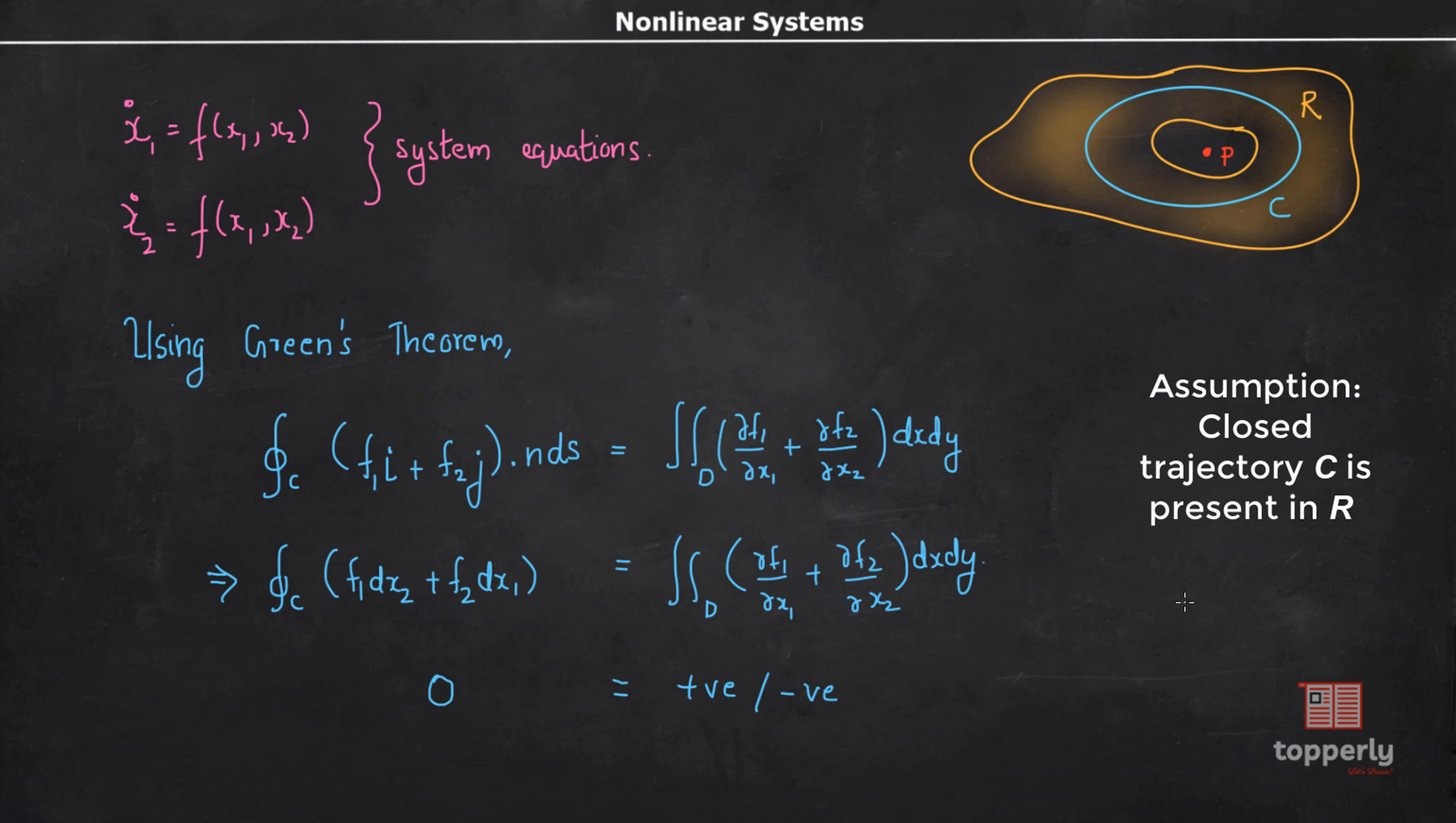This contradiction means that our assumption that R contained a closed trajectory was false. This criterion we used is called Bendixson's criterion, and it is stated as: if f₁ and f₂ are continuous in region R which is simply connected, and the expression ∂f₁/∂x₁ plus ∂f₂/∂x₂ is not identically zero and does not change sign at any point of R, then the system has no closed trajectories inside R.